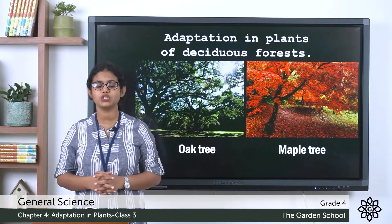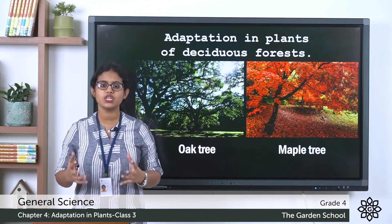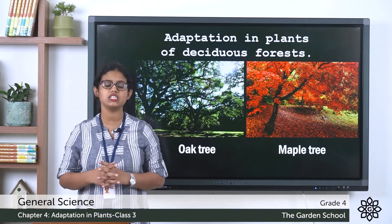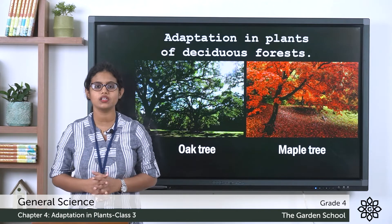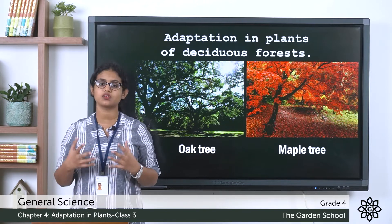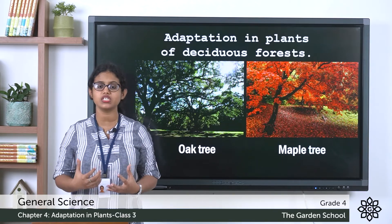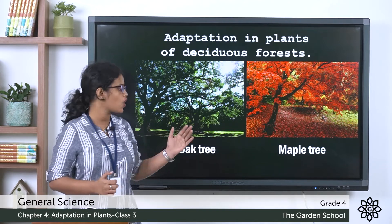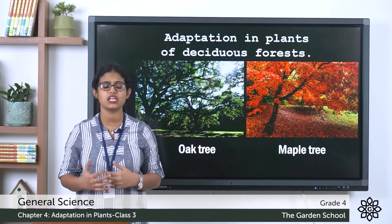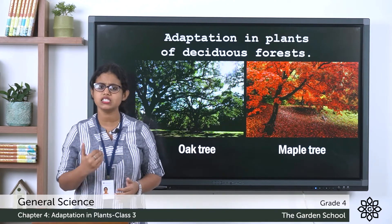Starting with adaptation in plants of deciduous forest. Deciduous forests are found in regions where there is a very cold winter season. The plants growing here have special characteristics that help them survive in cold winter conditions. Trees like oak and maple grow in deciduous forests and have special features that help them survive in cold weather.